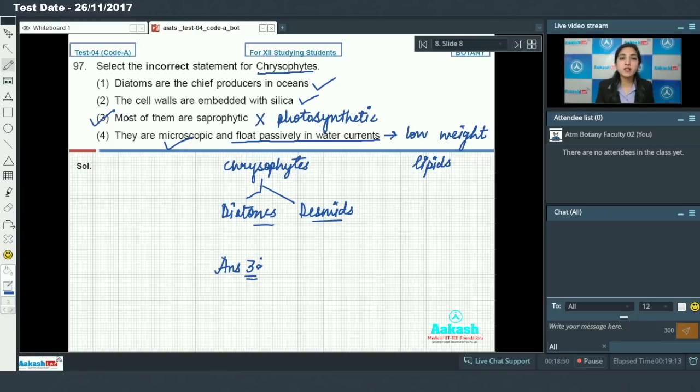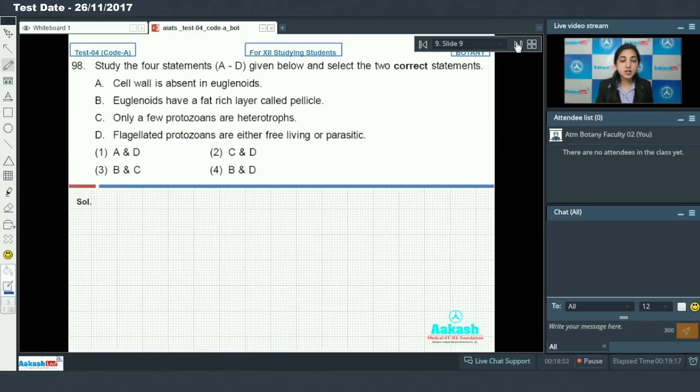Moving on to the next question, that is question number 98. Study the four statements A to D given below and select the correct statements. Here you are given with four statements and you have to select the two correct statements.